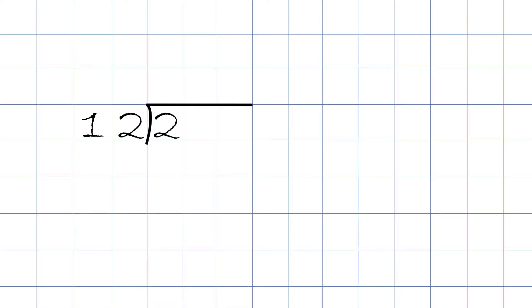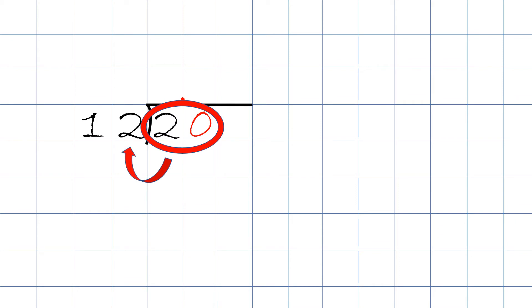In front of us, we have 2 divided by 12. We cannot divide a smaller number from a bigger number. So what we have to do is we put a 0 after the 2 and we put a decimal right on top. Now we take 20 divided by 12. We know it's only going to be 1, because 12 goes into 20 only once. So we put the 1 on top.